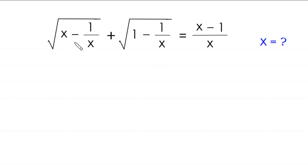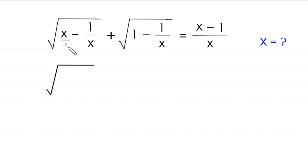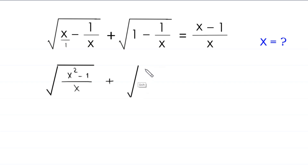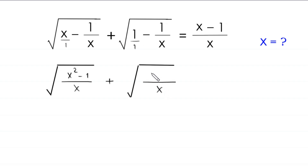This first expression will become root. We can write the denominator of this x as 1, and we take LCM of 1 and x. LCM of 1 and x is x. So this will become x squared minus 1. Then for the next term, we can write the denominator 1 and take LCM of 1 and x. LCM of 1 and x is x. So this will become x minus 1 is equal to...